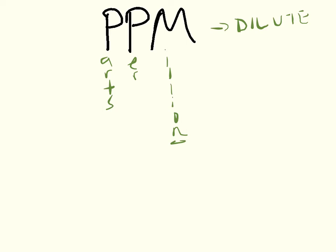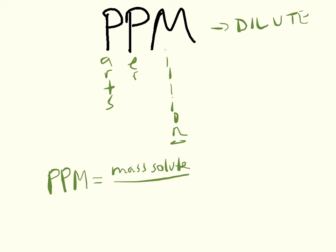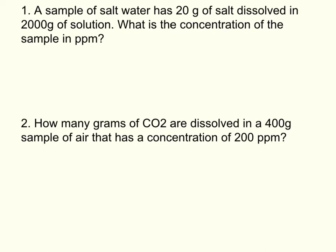The equation to calculate the PPM of a solution is: PPM equals mass of solute divided by the mass of solution, times one million. The best way to remember this is that one million has six zeros.